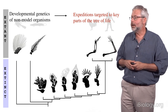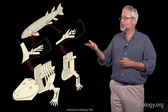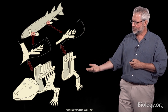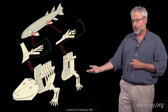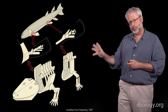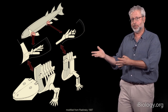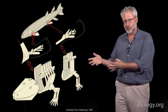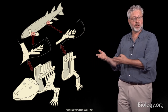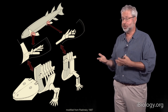Our work begins with the origin of tetrapods — the transition from something like a fish to a limbed animal. We can design expeditions that bridge this gap. What we do is look for places in the world that have rocks of the right age, rocks of the right type, and rocks that are exposed at the surface for us to find fossils. Using that toolkit, we can begin to bridge this gap.